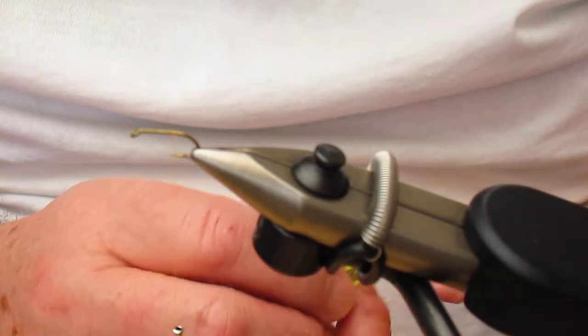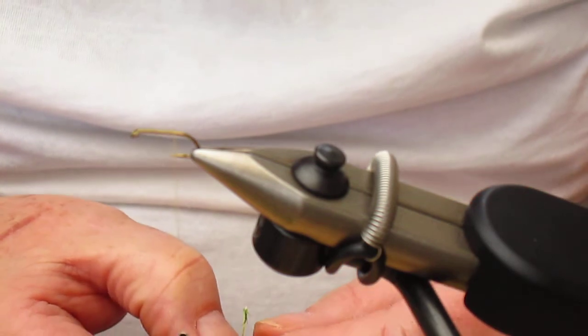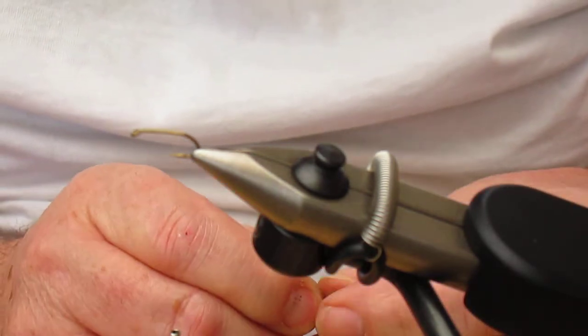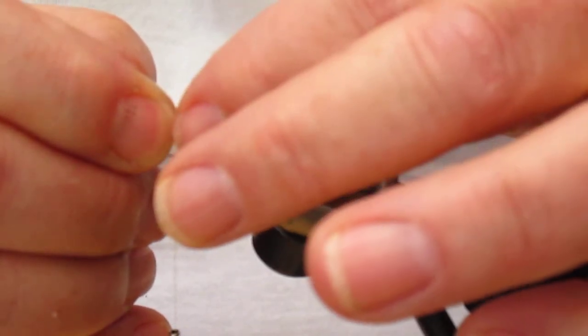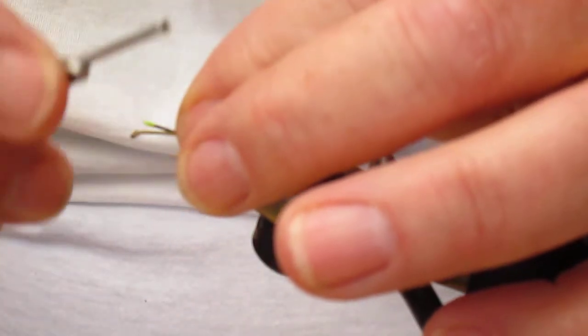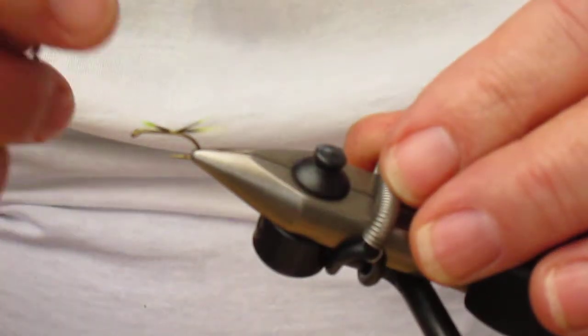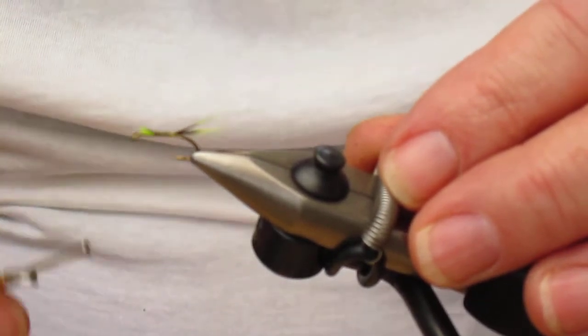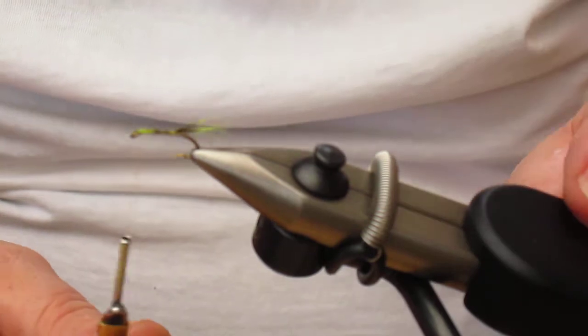Now the tail is approximately half a dozen, eight, half a dozen fibers from a dyed green grizzle hen cape, and we're going to position those on top so we've got the green tips but we've also got the black shading as well. Now we're going to bed that down, working the thread back to the eye, incorporating the waste into the fly.